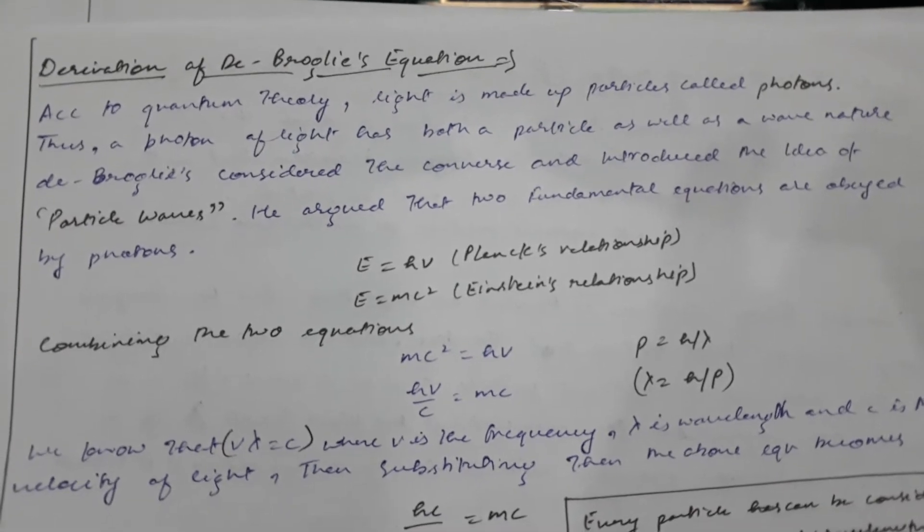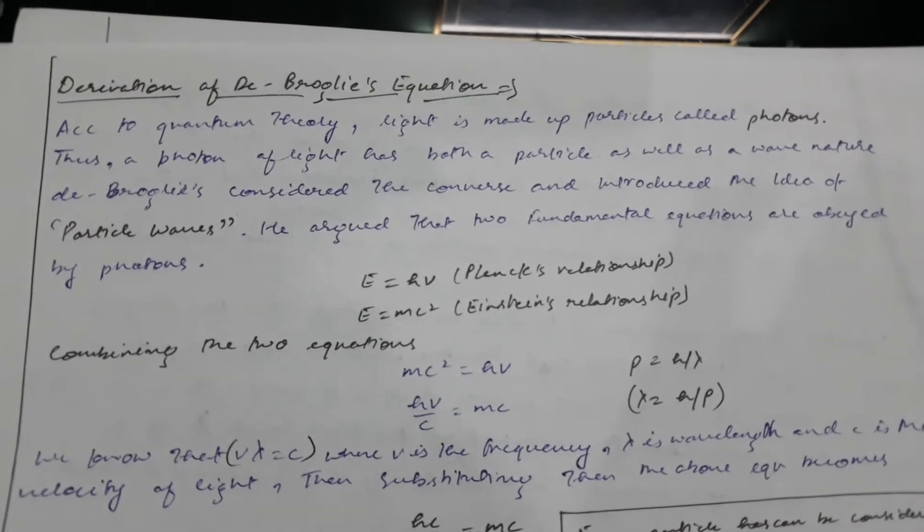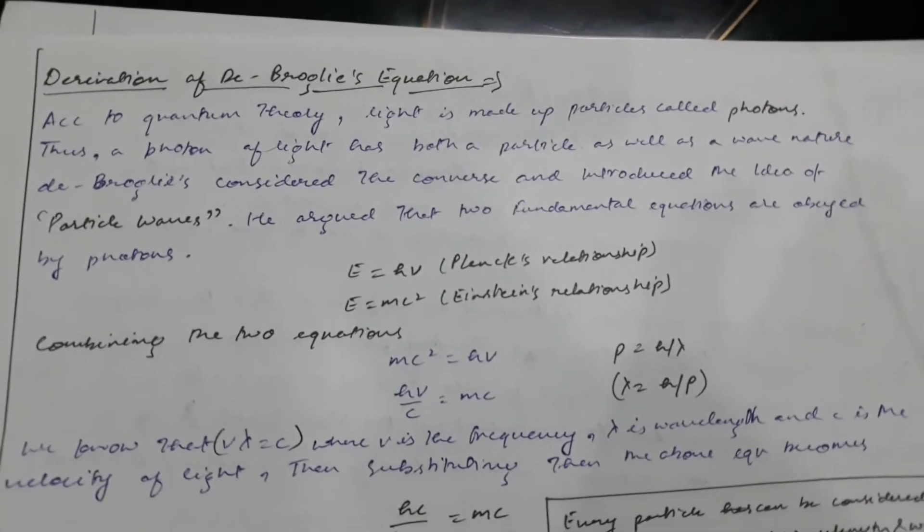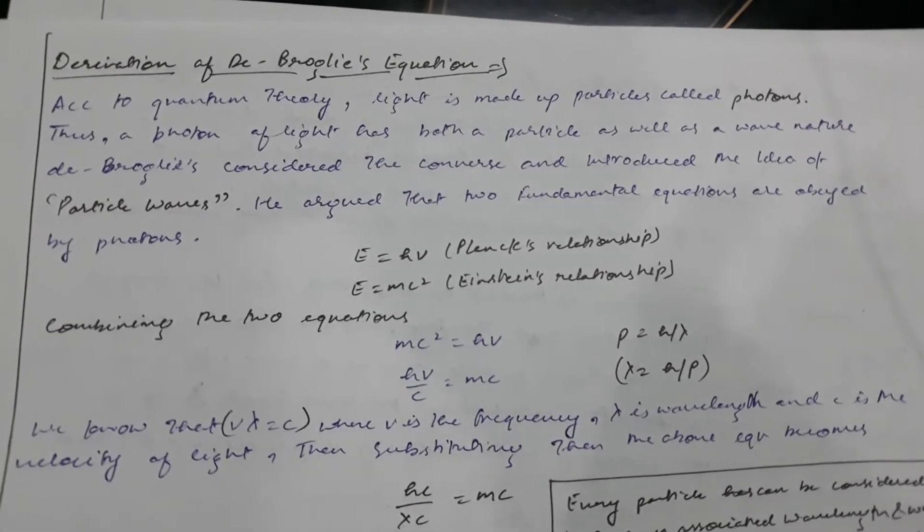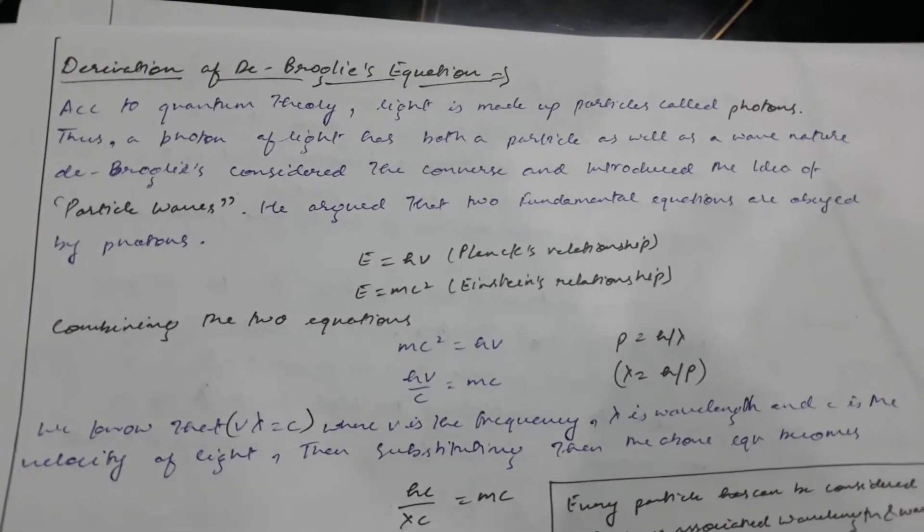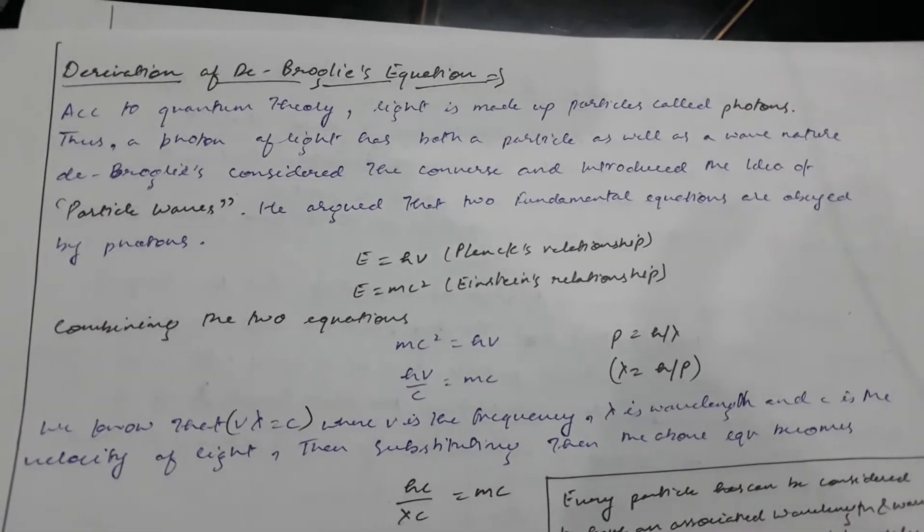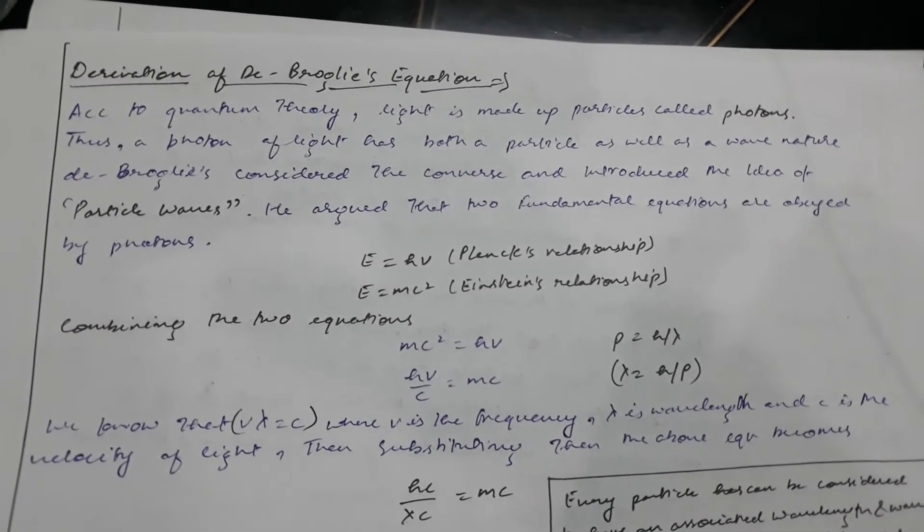Hello everyone, today we will derive de Broglie's equations. According to quantum theory, light is made up of particles called photons. Light travels in the form of small packets of energy which are known as photons.